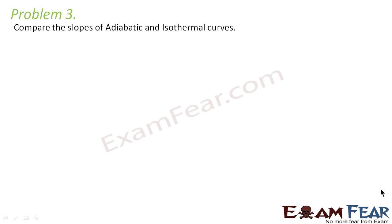Problem 3 says: compare the slopes of adiabatic and isothermal curves. The adiabatic as well as isothermal curves both look similar. The only difference is that adiabatic curves are steeper than isothermal curves — that is, the slope is more. So the slope of the adiabatic curve is greater than the slope of the isothermal curve, and we have to derive a relation between them.